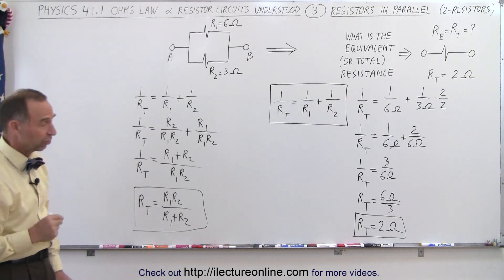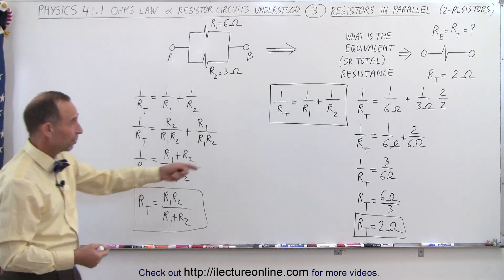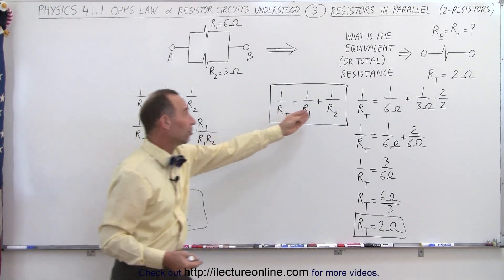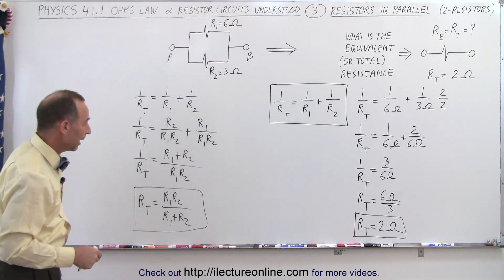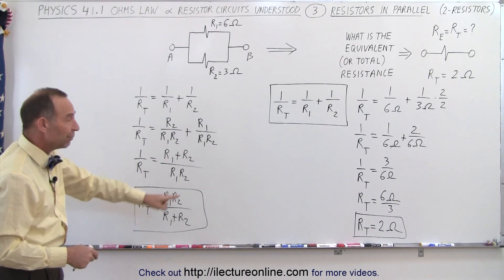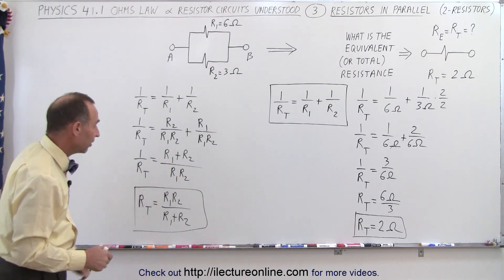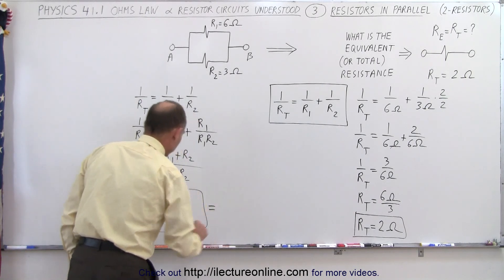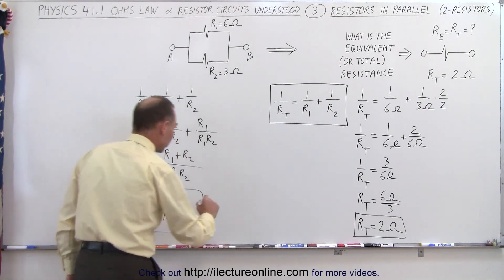Now this only works if you have two resistors in parallel. With three resistors, you probably want to go with this equation, just simply adding another 1 over R3 at the back. But let's go ahead and see if we get the same result if we plug in the same values here for R1 and R2. So R1 is 6 ohms, R2 is 3 ohms.